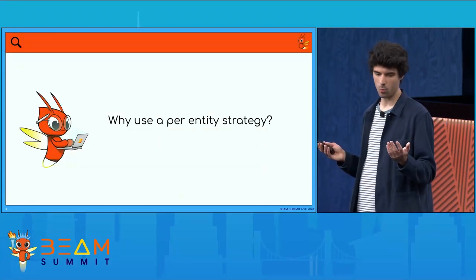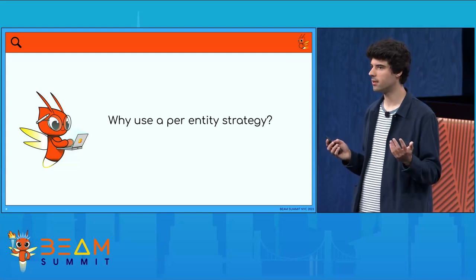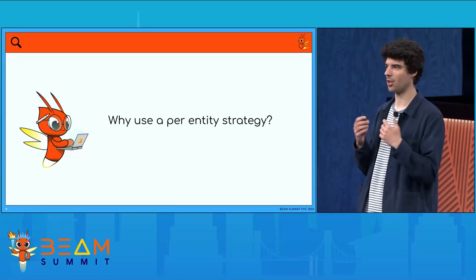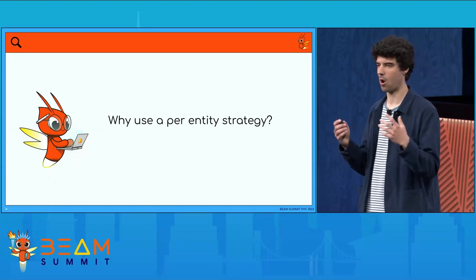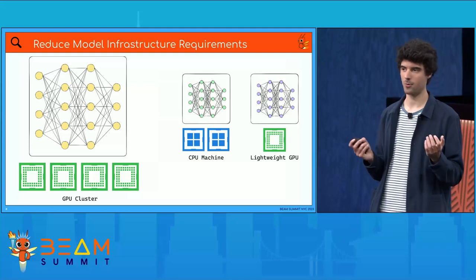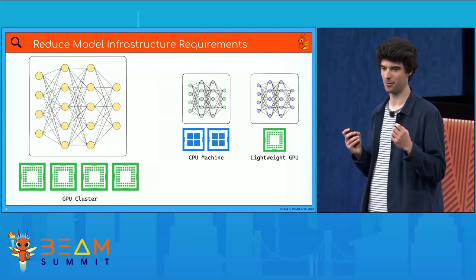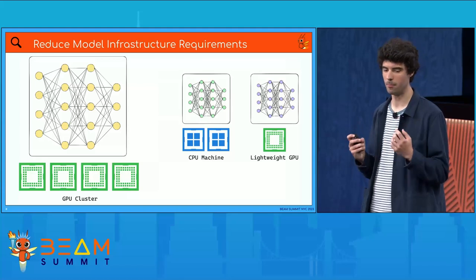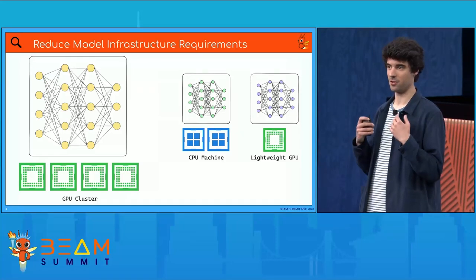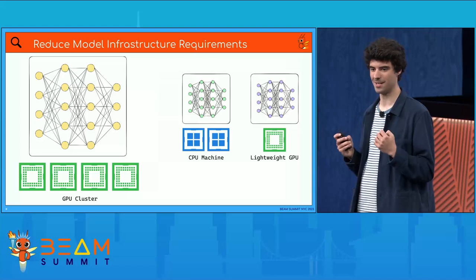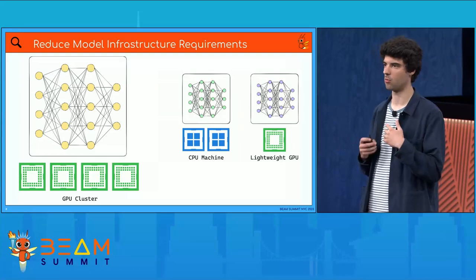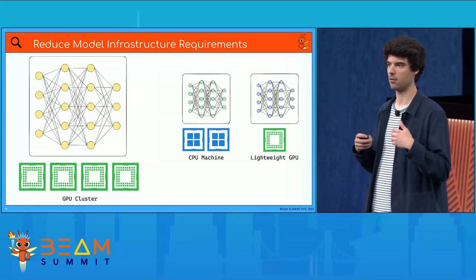You're probably wondering: why would I use a per-entity training approach? Because now I have to manage a whole bunch of models — that sounds a lot more complicated than managing one big model. Well, the very first argument is hardware is very expensive. In order to run those really big models, you need really, really powerful hardware. For LLMs, you often need clusters of the most expensive GPUs, and if you're serving a lot of traffic, that's going to be a really pricey bill. The simpler models might be able to run on CPUs or more lightweight GPUs, saving a lot of costs.